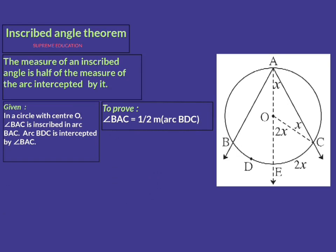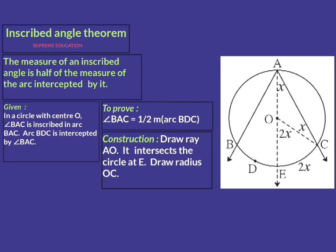To prove this, we do one construction: draw ray AO — it intersects the circle at point E — and draw radius OC. This construction is already drawn in the figure: ray AO intersects the circle at point E, and radius OC is drawn.